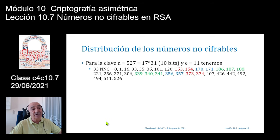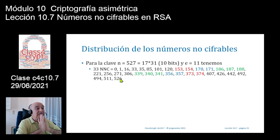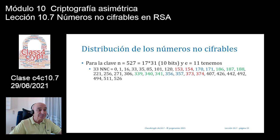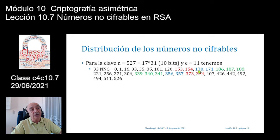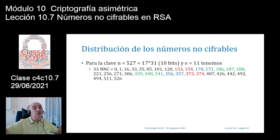Lo que me sale son estos 33 números: el 0, el 1, el 16, el 33, el 35, el 85, etc. Algo bastante interesante es la distribución de los números no cifrables: aparece un conjunto de números con una distribución más o menos uniforme —para números pequeños sí es así— con números de uno, dos y tres dígitos distribuidos de forma más o menos uniforme en todo ese espectro dentro del grupo de tamaño N.